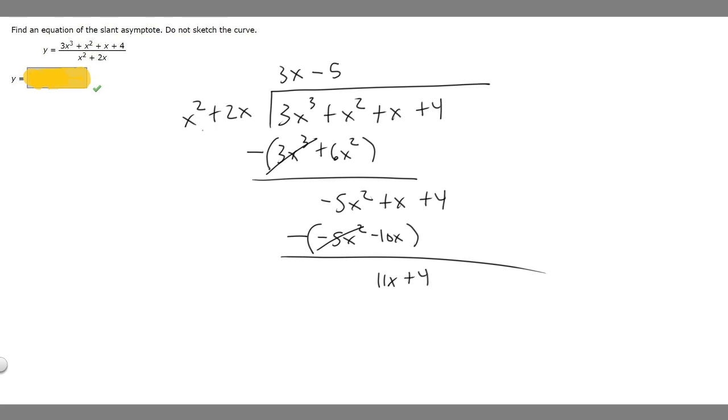And then you can see here that x squared does not go into 11x. So all we have to do is we just stop here because this down here would just be our remainder. But when we write our equation, we don't include the remainder. So the answer to this question is just going to be 3x minus 5.